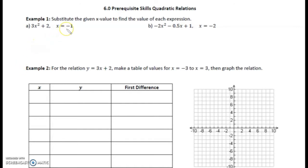First, we're going to substitute the given x value to find the value of each expression. Part a, 3x² + 2, and we're going to substitute x equals negative 1. So I always make it a habit of putting brackets around this negative 1 when we sub it in, because then we won't forget to actually square negative 1. Remember, negative 1 in brackets squared is not the same thing as saying negative 1 squared. So negative 1 in brackets squared will turn into a positive. Then we'd have 3 positive 1 plus 2. So this is just 3 plus 2, which is 5.